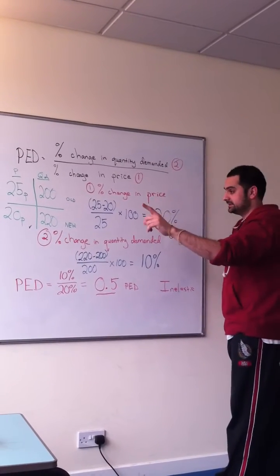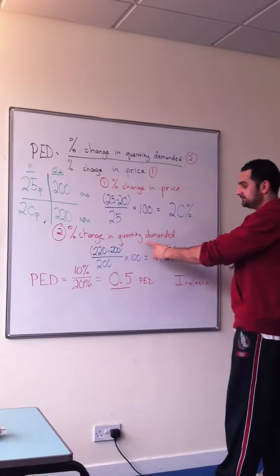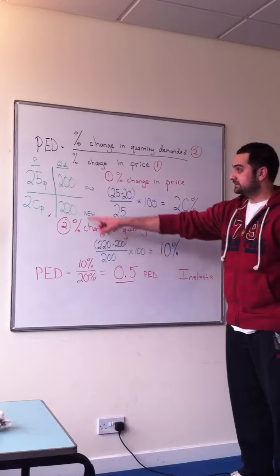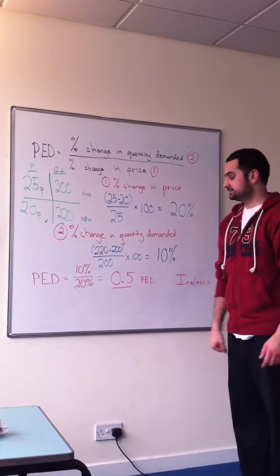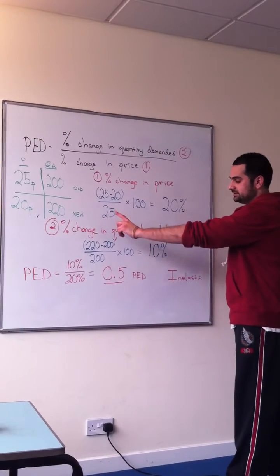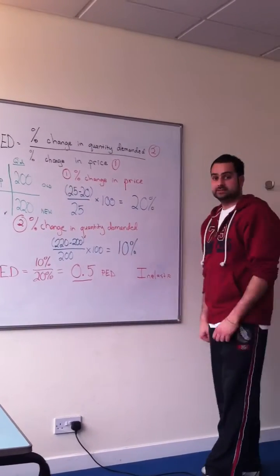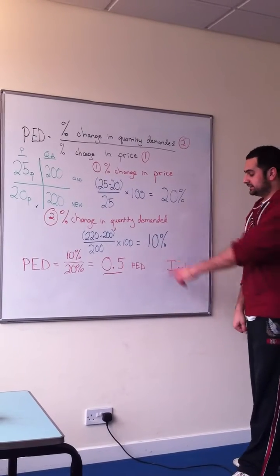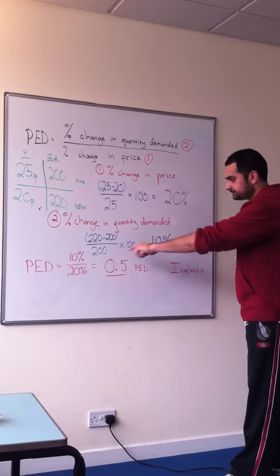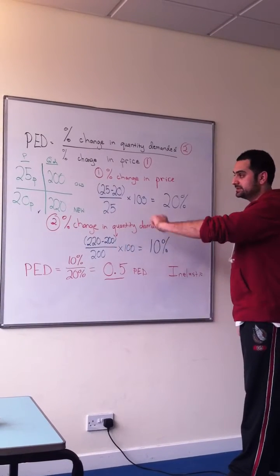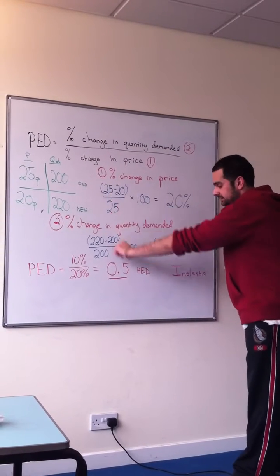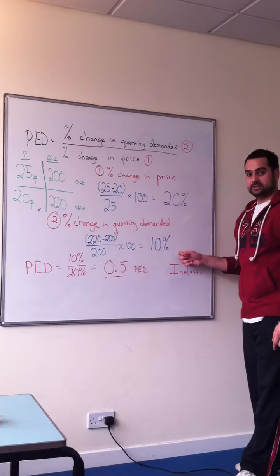The next thing we need to do is find the percent change in quantity demanded — how many more or less did we sell? We saw that when we dropped price, we sold about 20 more units. So we have 20 more units, which is 220 less 200, divided by the original amount of 200, times 100, giving us 10%.